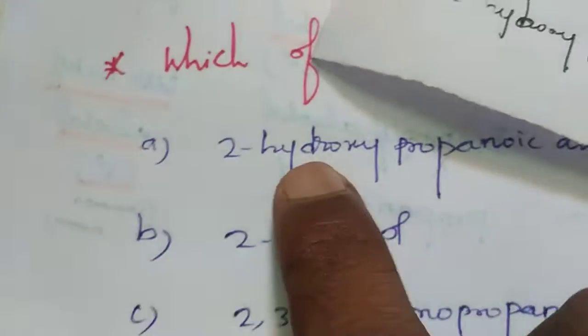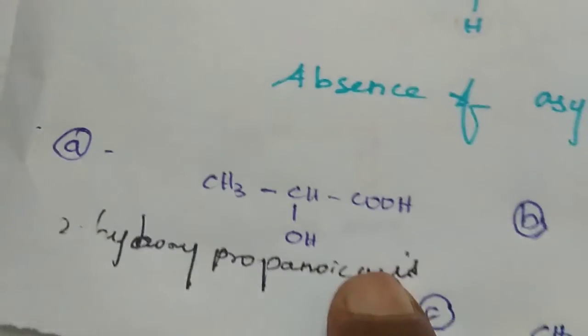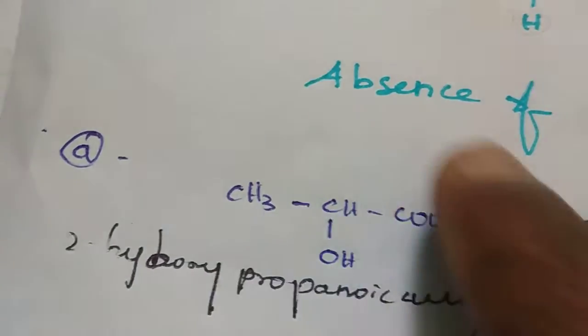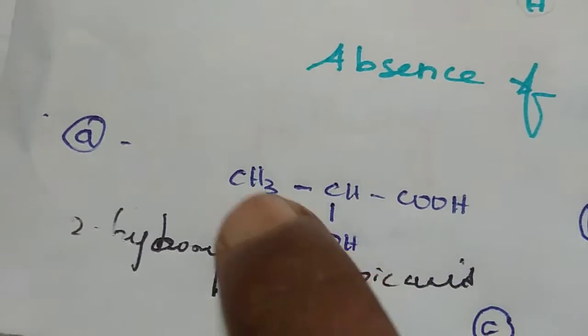Next one is A: 2-hydroxypropanoic acid. This is the 2-hydroxypropanoic acid. This is also a chiral carbon because this carbon attached with four different groups.